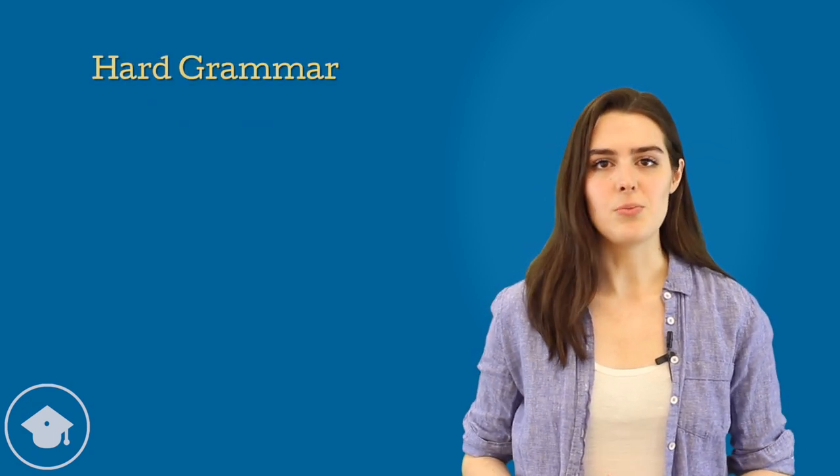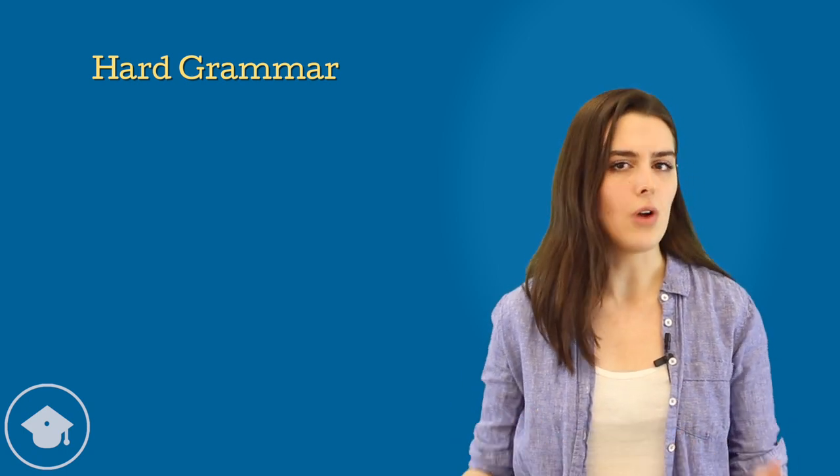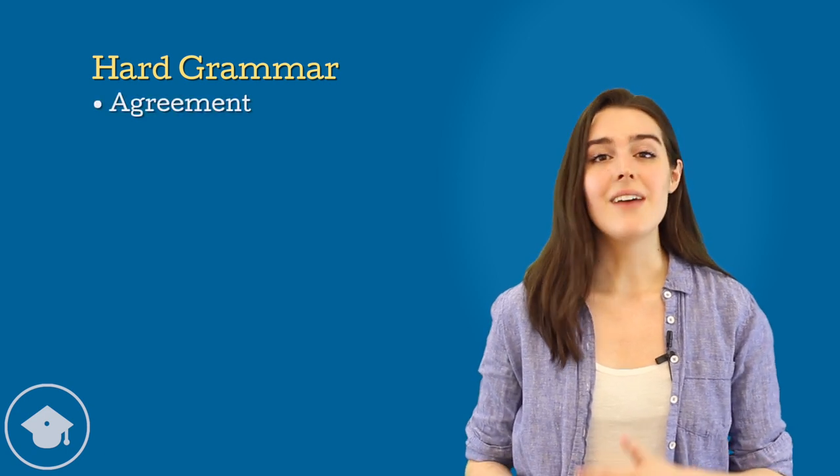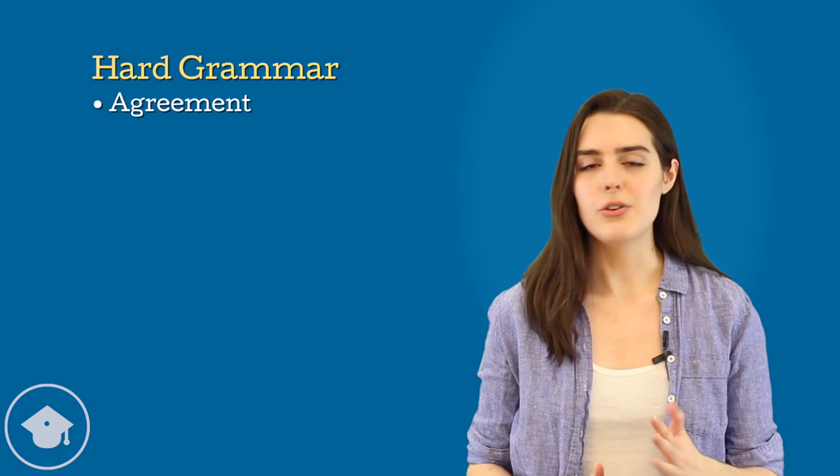Hard grammar, the next most important category, involves the straight ahead, hard and fast, right or wrong grammar rules. For example, agreement. If you have a singular noun and a plural verb, it's wrong. No two ways about it.